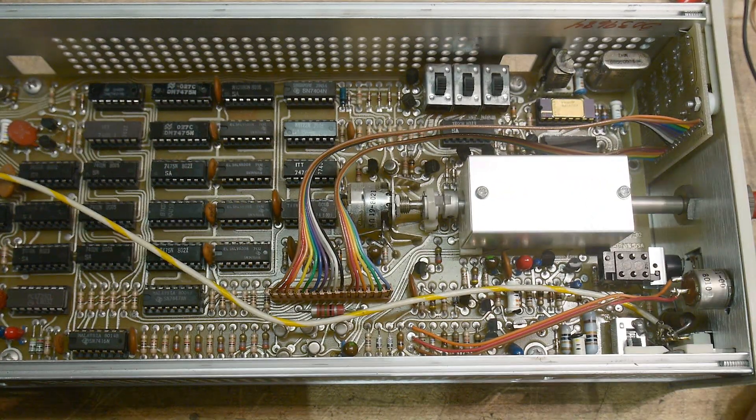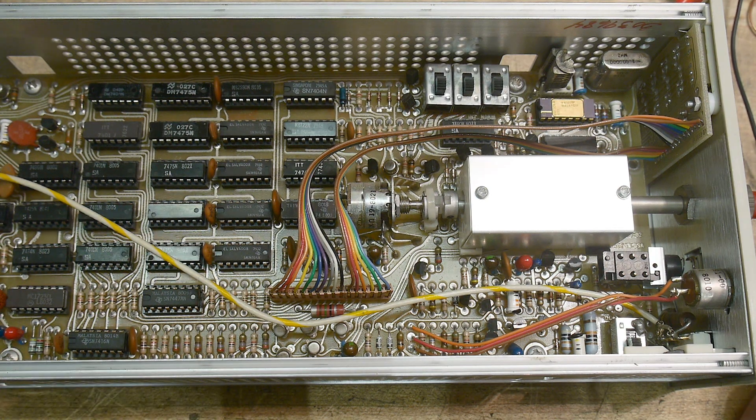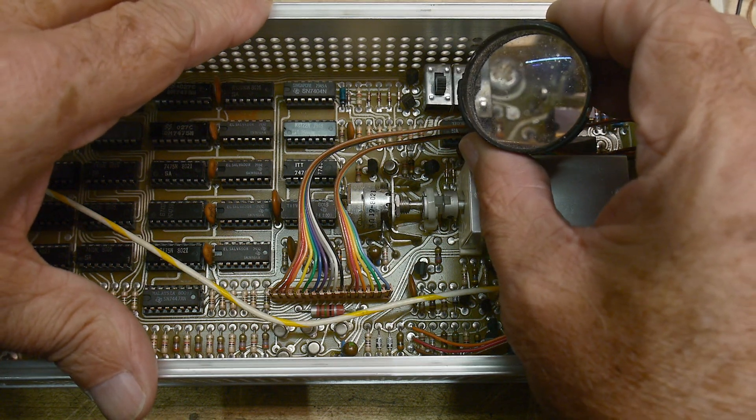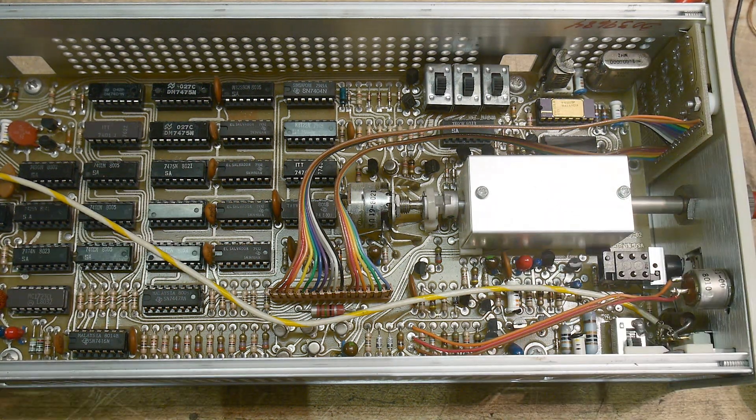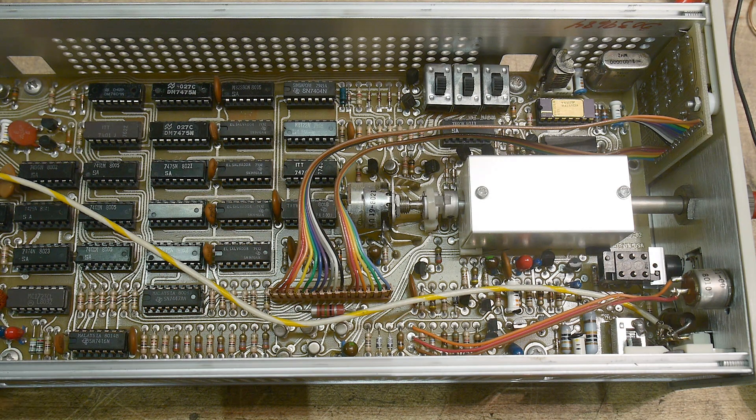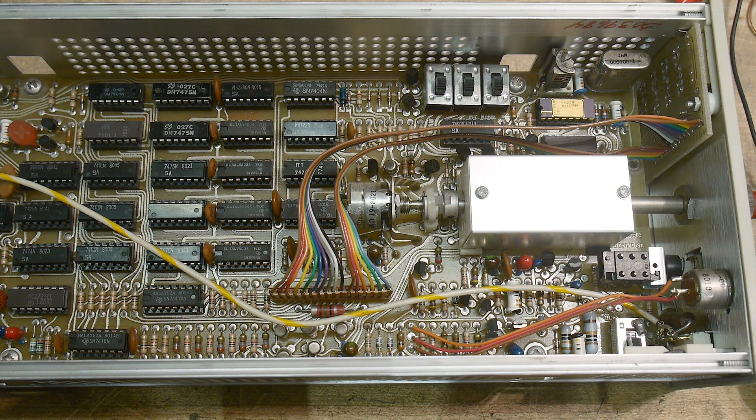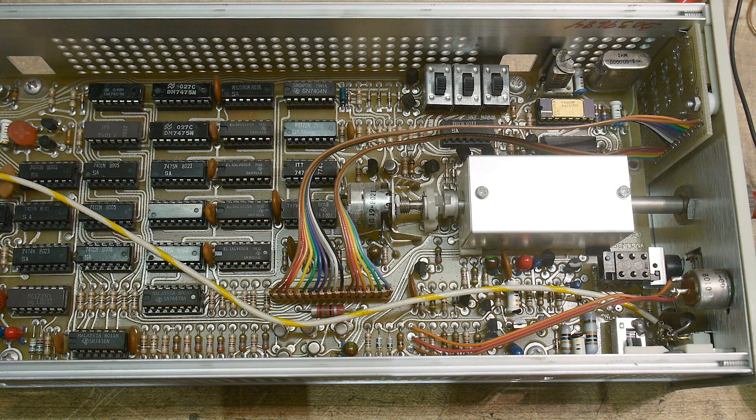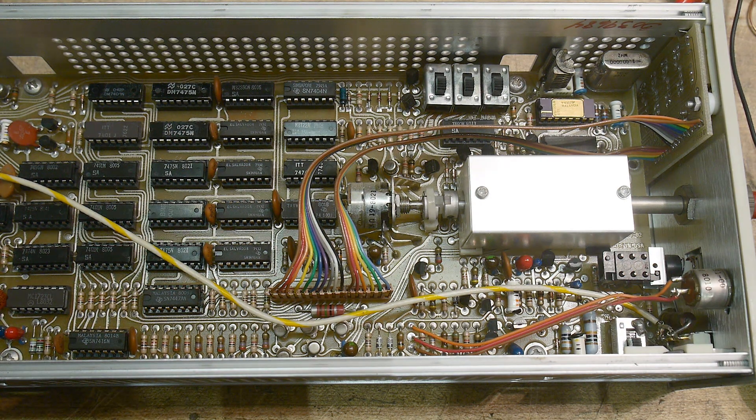This is that strange chip over there. A Mostec. I can't read it from here. Too small for my eyes. An MK5009P. Some kind of clock generation chip. But everything else is in discrete logic. It's all 7400 series. And there is an EPROM part down here at the bottom. Not sure what that's doing down there.